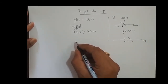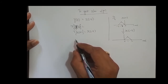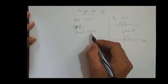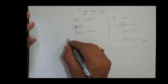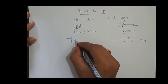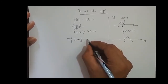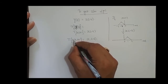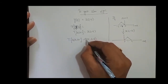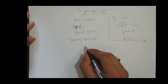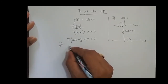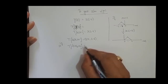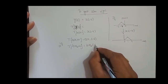We call this time reversal. Whatever input we feed, the output is nothing but its time-reversed version. So if we feed x1 of t to the system, the output is x1 of minus t — its time-reversed version. If I feed the scaled version a times x1 of t, the output is also the time-reversed version of a times x1 of t. Similarly, if I feed b times x2 of t, the output is the time-reversed version of b times x2 of t, which is b times x2 of minus t.